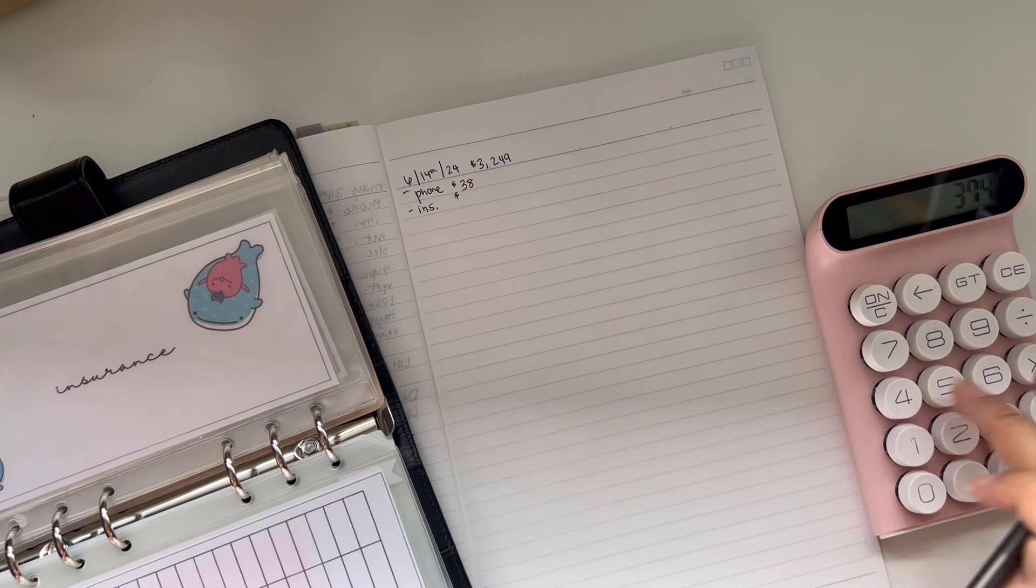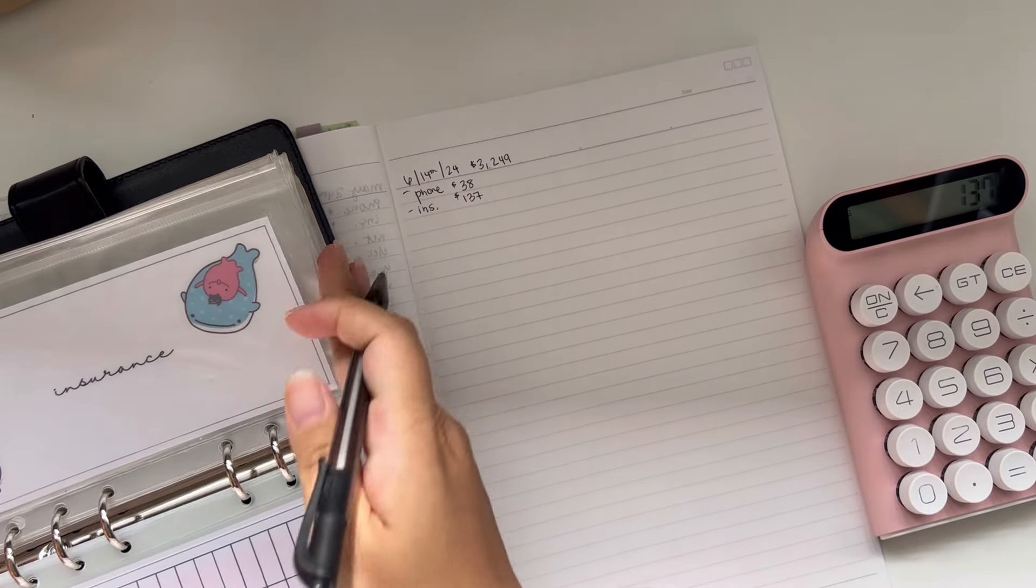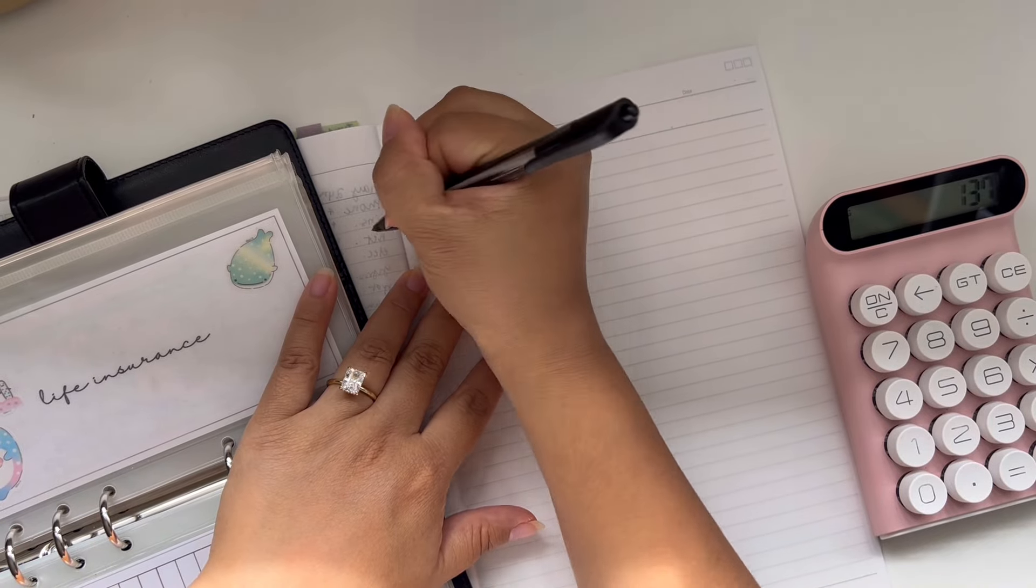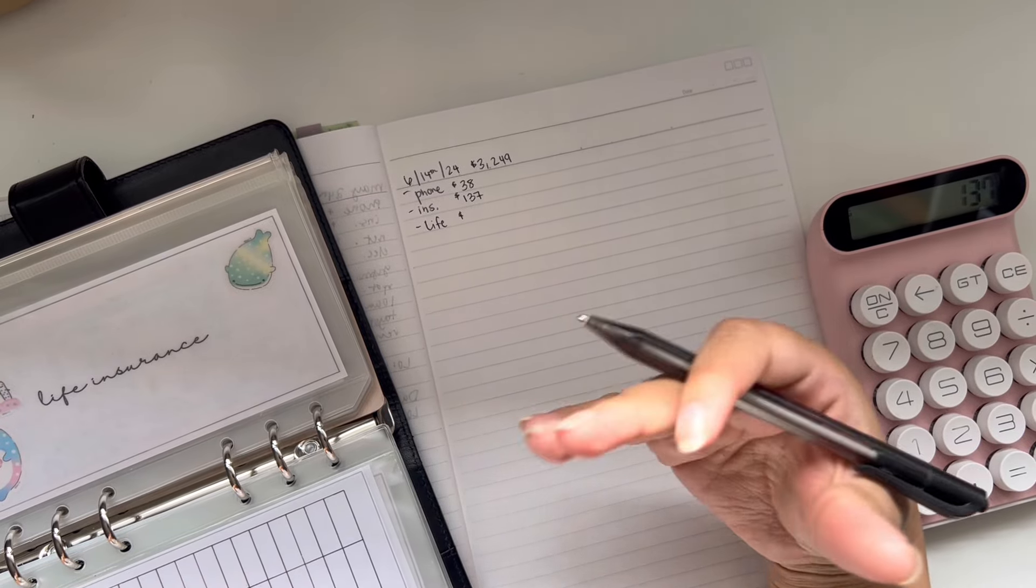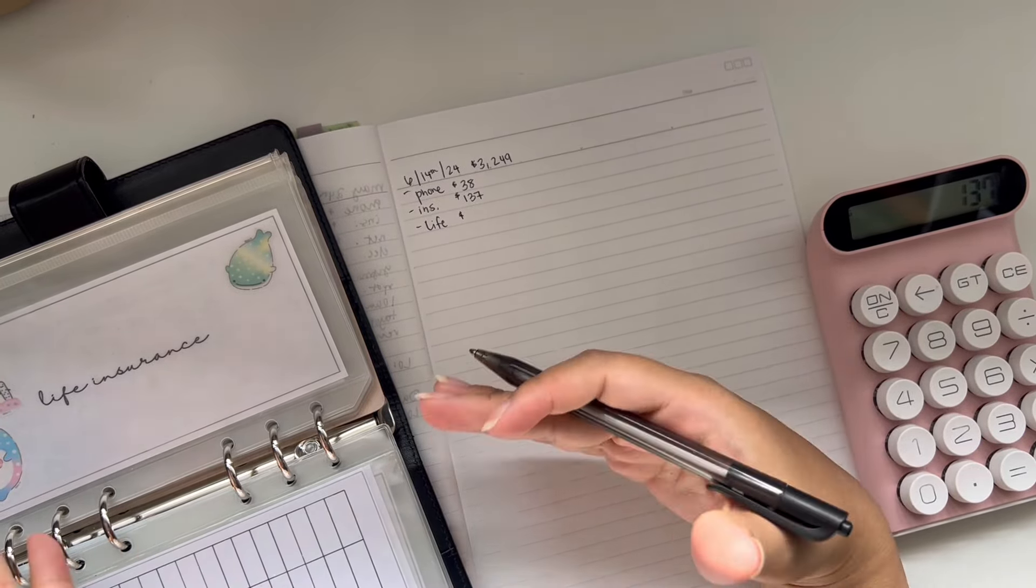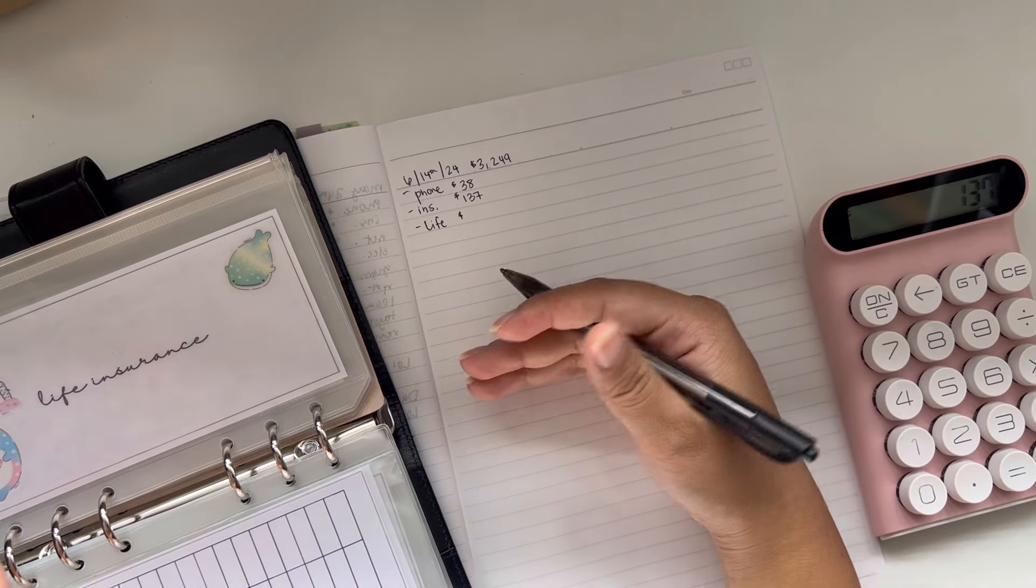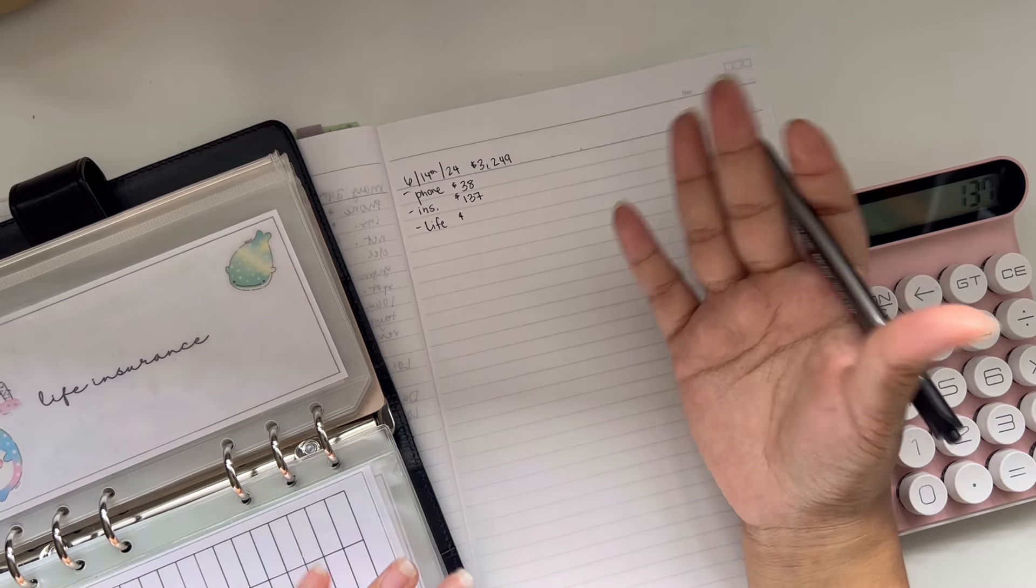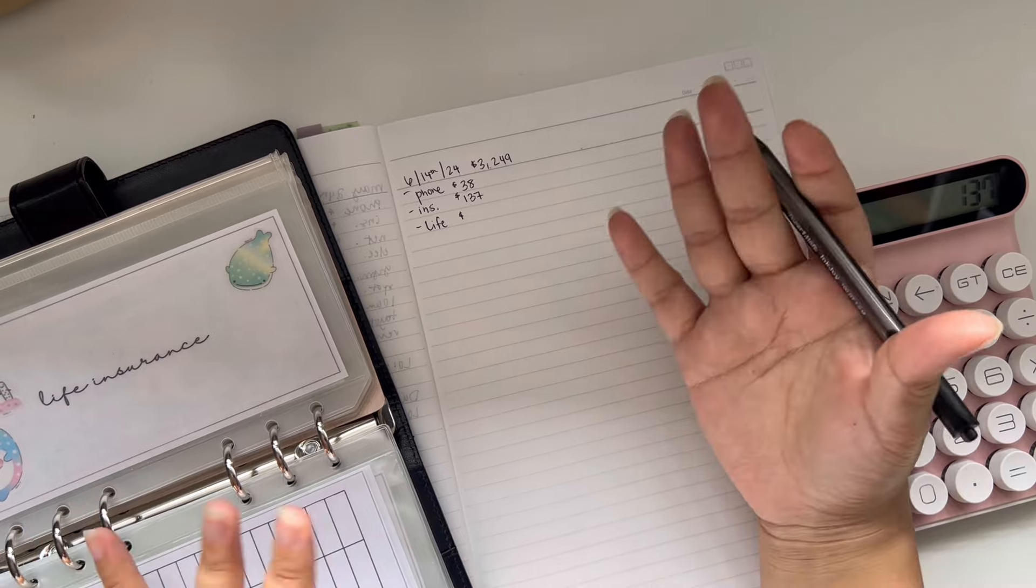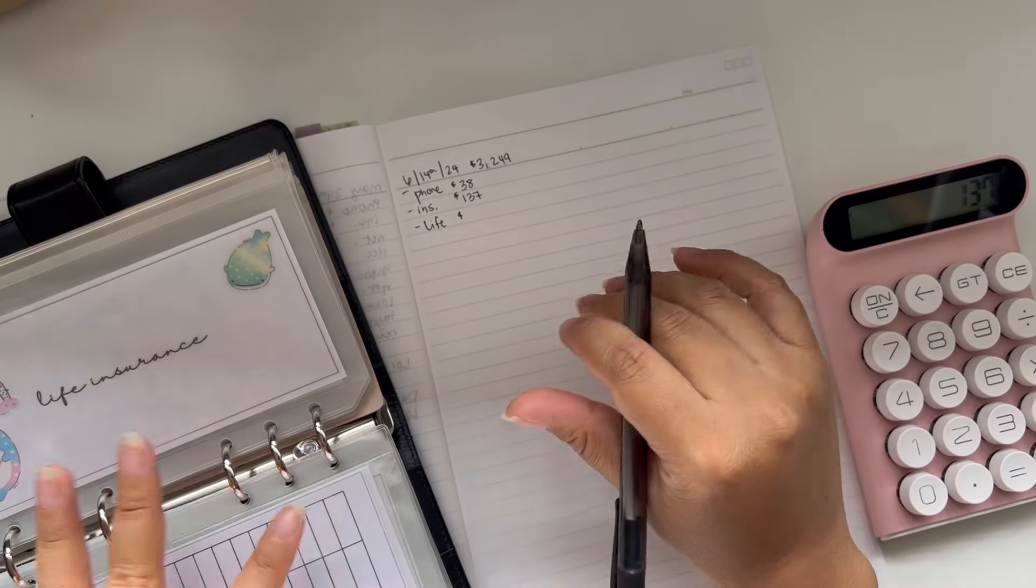Next is insurance. My insurance is always the same every single month, $274. So I always want to stuff half at a time. So $137. Next is for life insurance. So in case you guys are familiar, when you get life insurance, essentially it is something you pay into every single month, depending on whichever one you get.